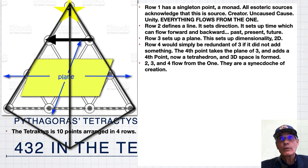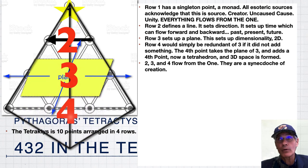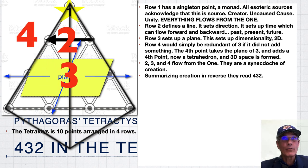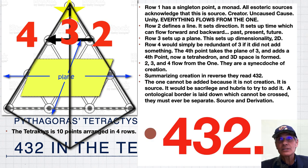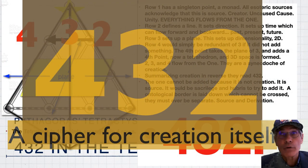So 2, 3, and 4 flow from the 1. The 1's the creator, but the creation, these different levels, 2, 3, and 4. That's the synecdoche of creation. So summarizing creation in reverse, they read 4, 3, 2. Basically, it's creator and created. 4, 3, 2 is basically a cipher for creation itself.